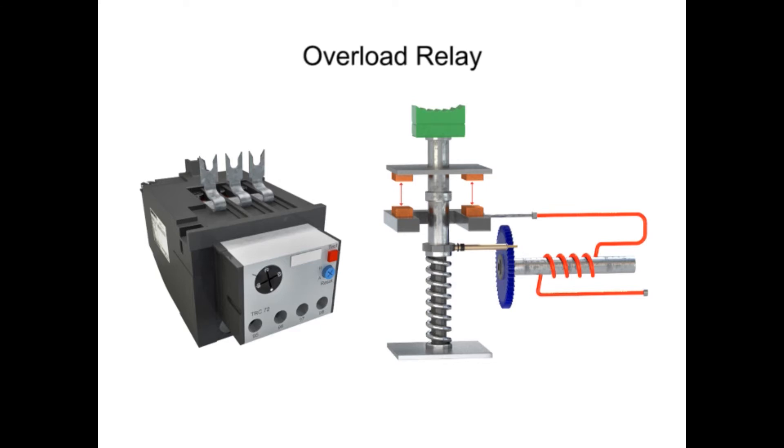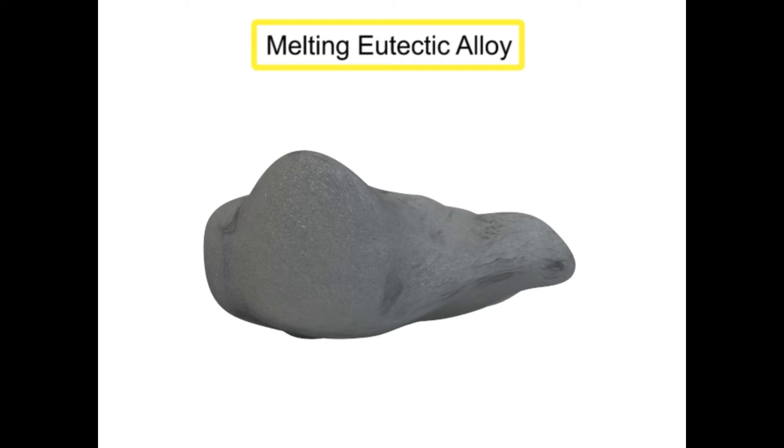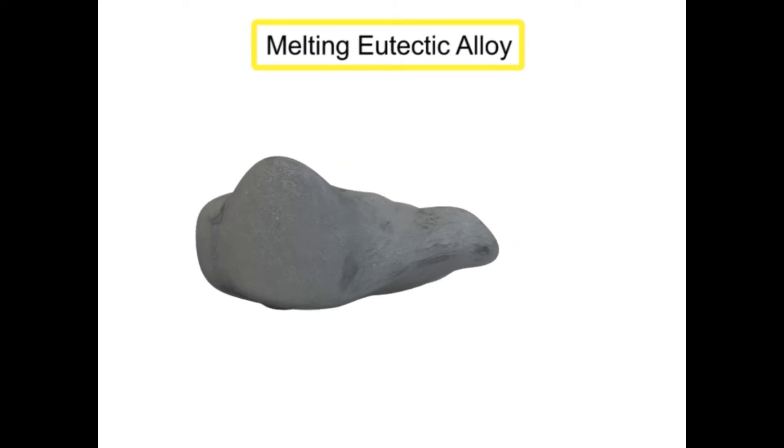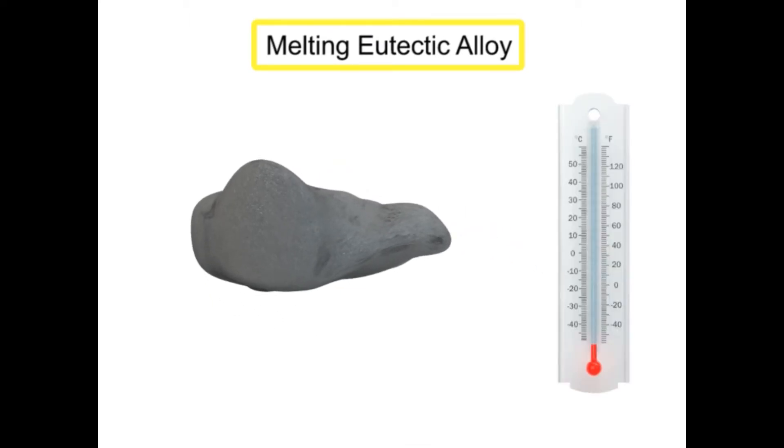The most common type of overload relay uses a melting eutectic alloy. A eutectic alloy is a specific type of metal that changes directly from a solid to a liquid at a fixed temperature.